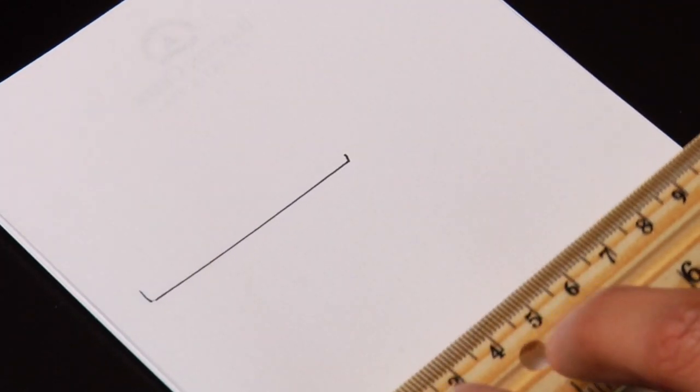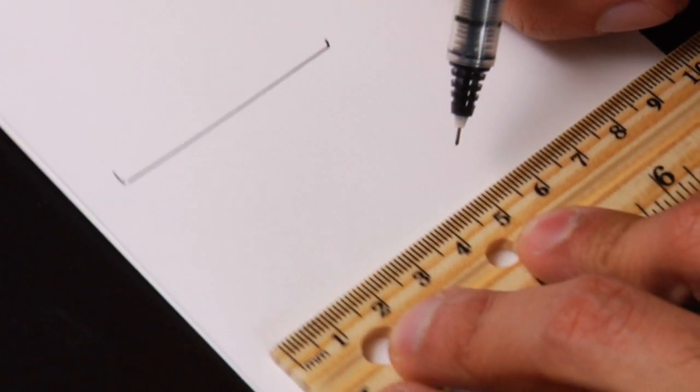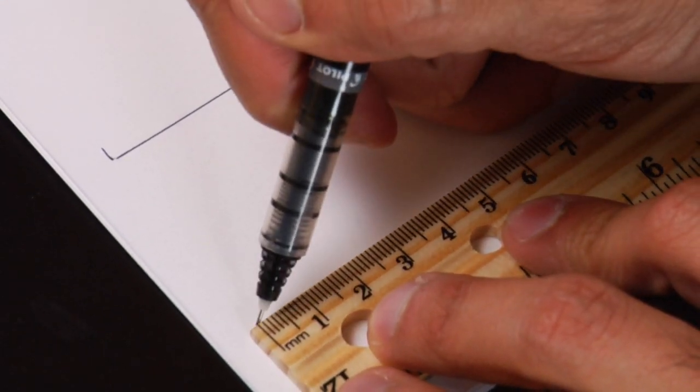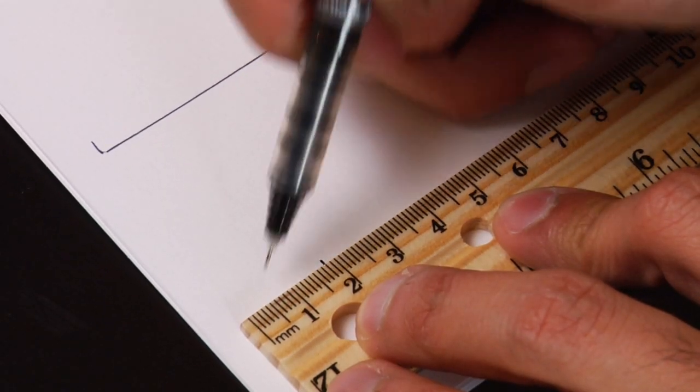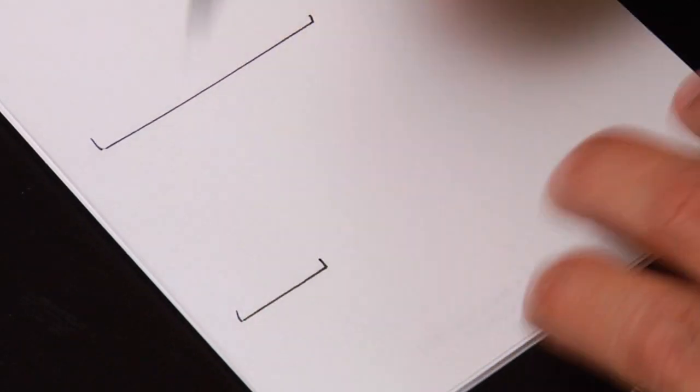Now if we wanted to do two centimeters long, we could do the same thing. Just flip the ruler over, start at zero, and we go all the way to two. And there we have it. We have two centimeters right here.